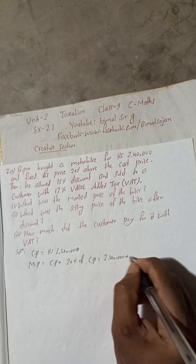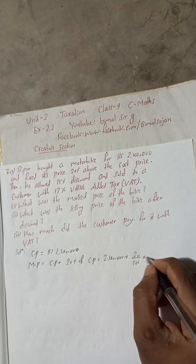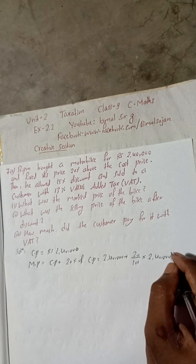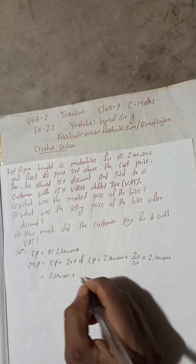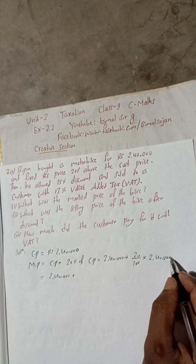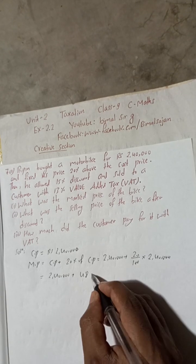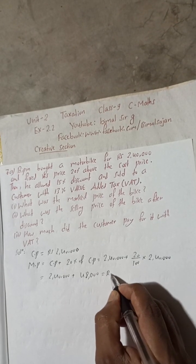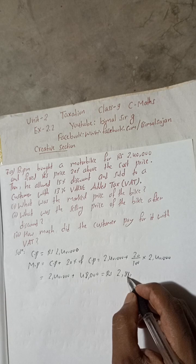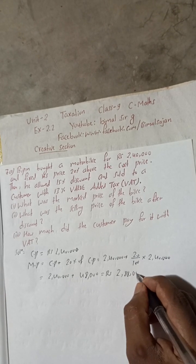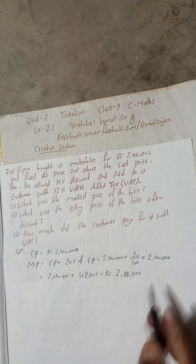CP is already given as 2,40,000. So MP equals 2,40,000 plus 20 divided by 100 into 2,40,000. Cancelling the zeros: 2,40,000 plus 48,000. Adding these together gives us 2,88,000.